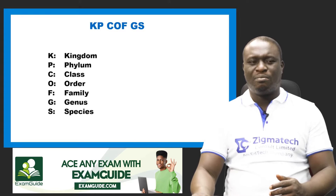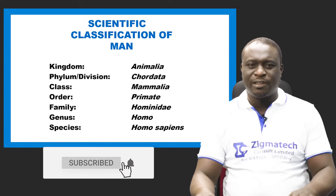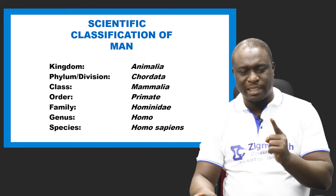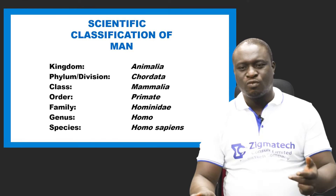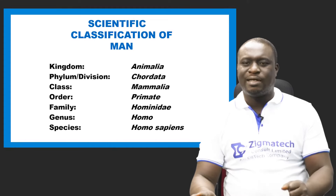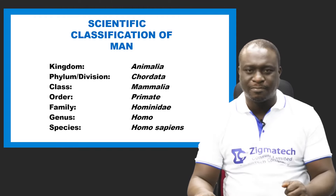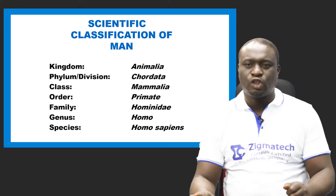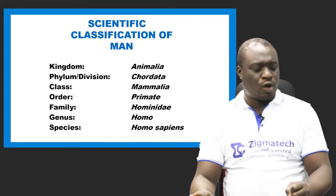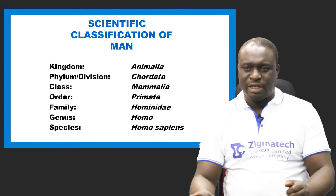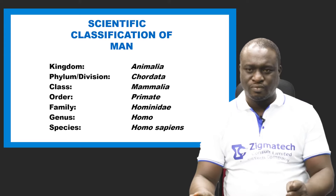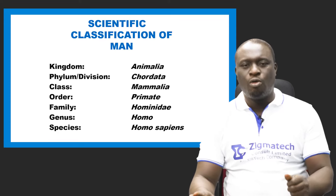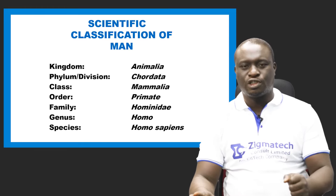Now let's take a look at the taxonomy of man. The classifications are: Kingdom — Animalia; Phylum (used for animals) — Chordata; Class — Mammalia; Order — Primate; Family — Hominidae; Genus — Homo; and Species — Homo sapiens. Note that division is used for plants while phylum is used for animals.